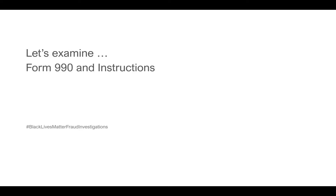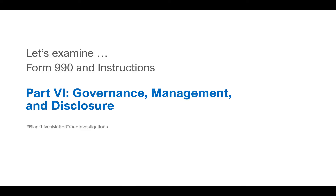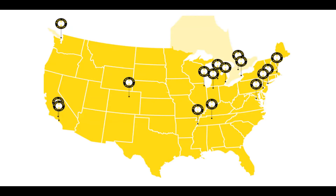In this video message, we're going to examine Form 990 and the instructions for part six — governance, management, and disclosure. I want to take a look at this map before we jump into the Form 990. In 2020, the Black Lives Matter Global Network Foundation had several chapters across the United States, as you can see here. I investigated many of those chapters, and you can find the results on this YouTube channel — identified by Black Lives Matter New York, Black Lives Matter Philadelphia, and so forth. This map is going to become a very important part of the information about part six of the Form 990.